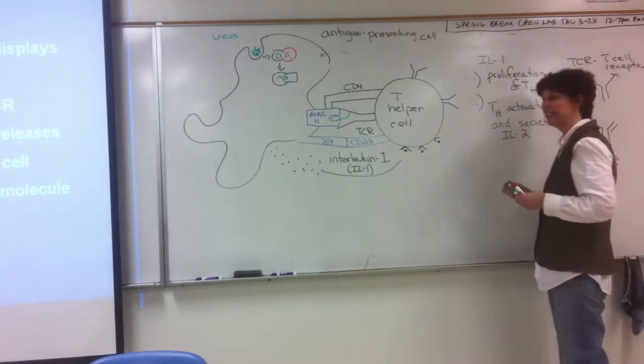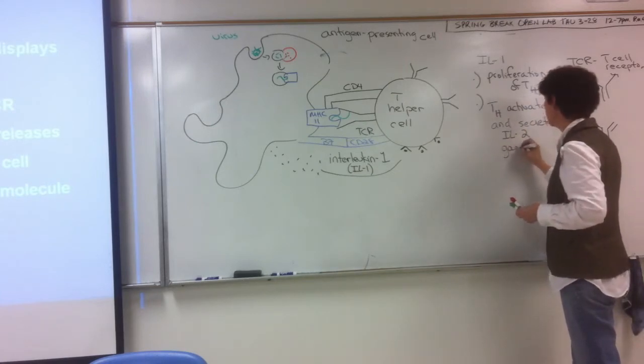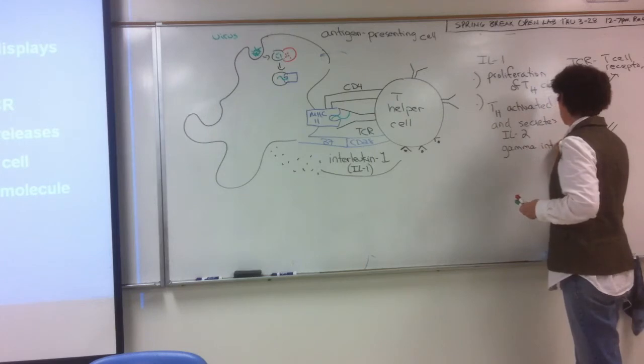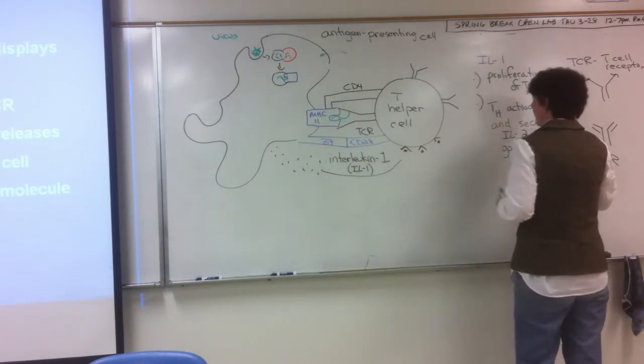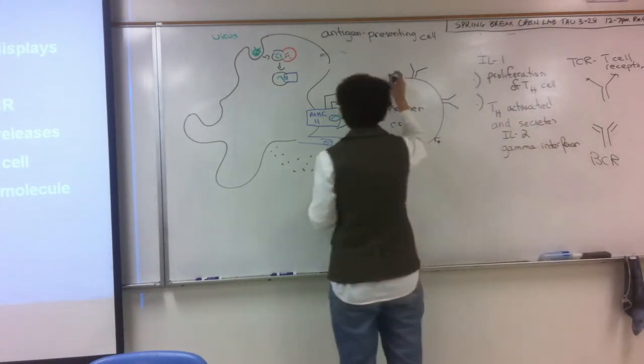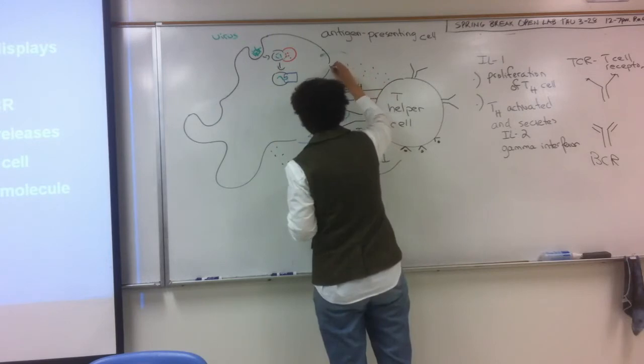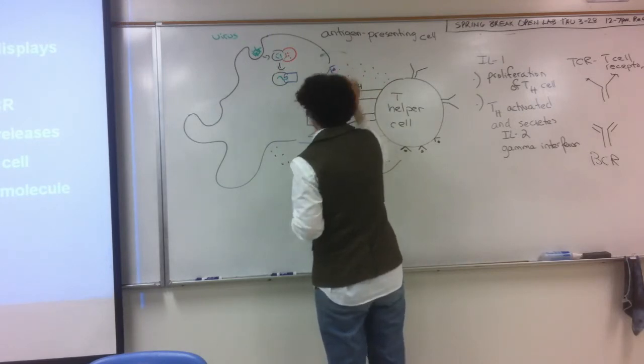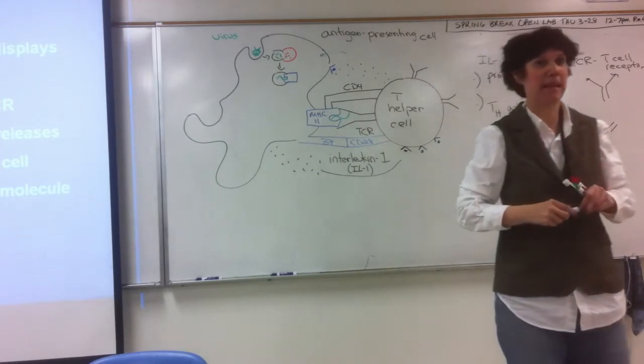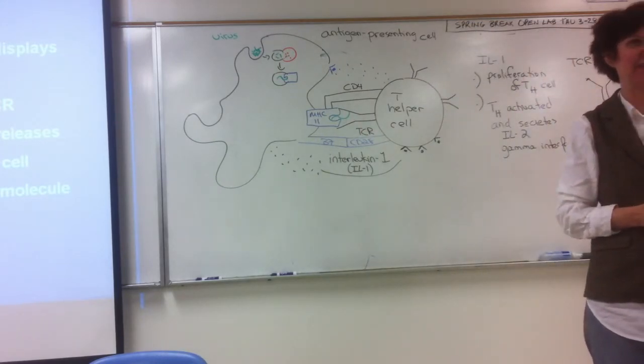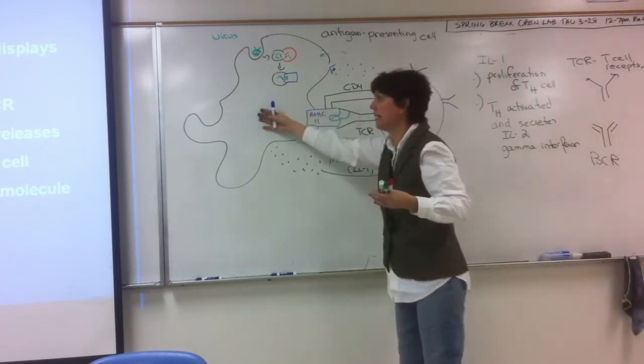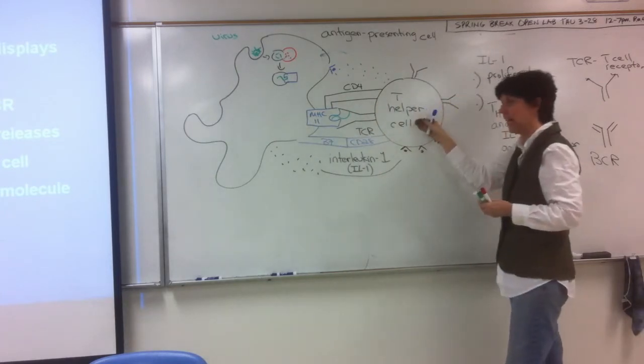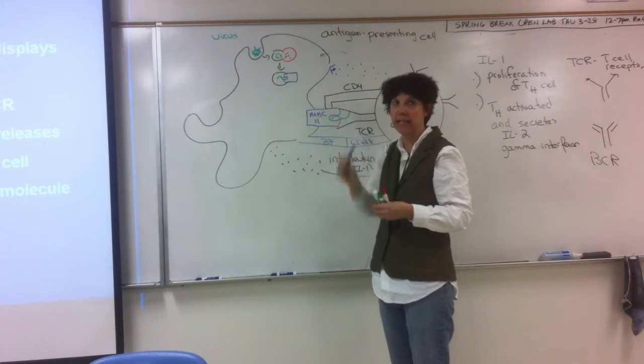And, we'll talk about what interleukin-2 does. In addition, it makes an interferon, known as gamma interferon. I'm going to have to put these in different colors. And, the gamma interferon goes back to the macrophage. If this is a macrophage and not a dendritic cell, it makes it a super-killing machine. It makes it even more active as a phagocytic cell. So, there's this co-stimulation occurring between them. So, the macrophage or dendritic cell activates the T-helper cell. And, the T-helper cell activates the macrophage and makes it even more active.